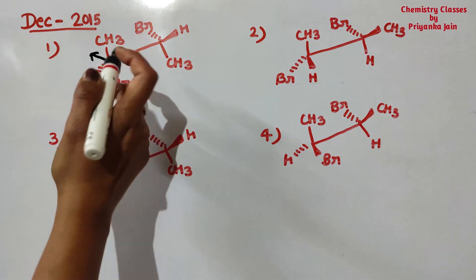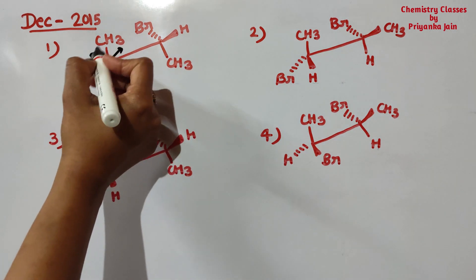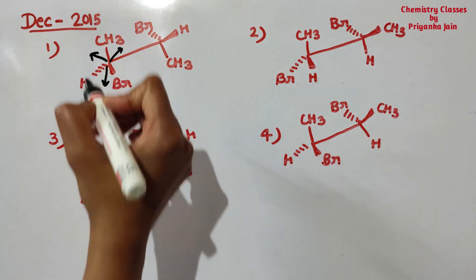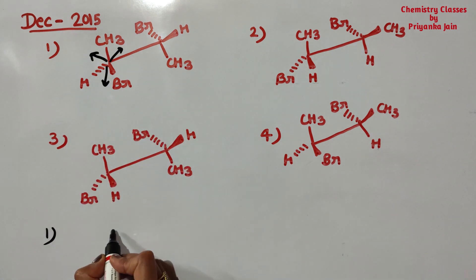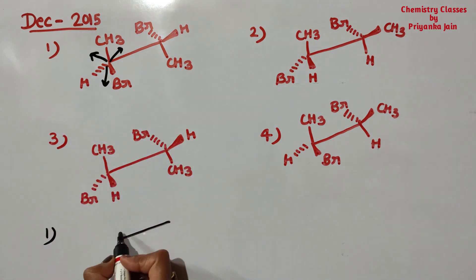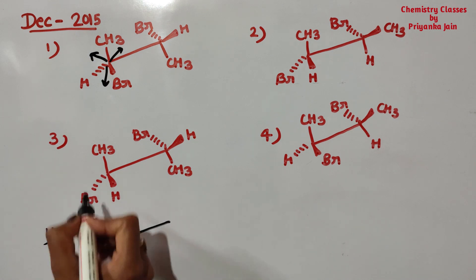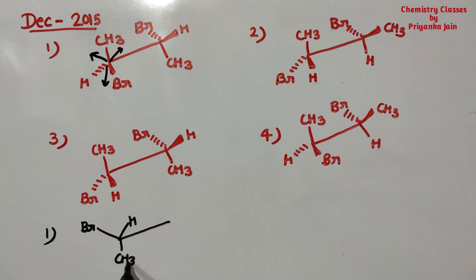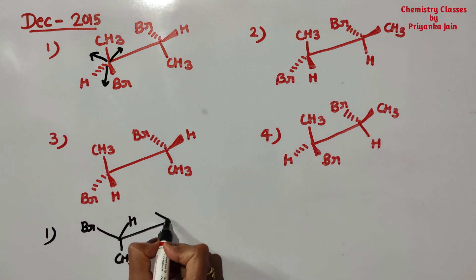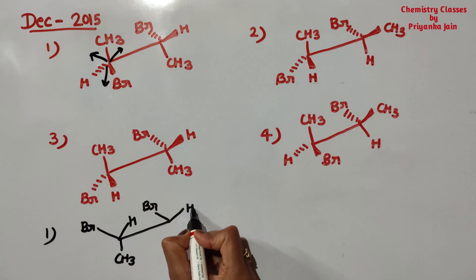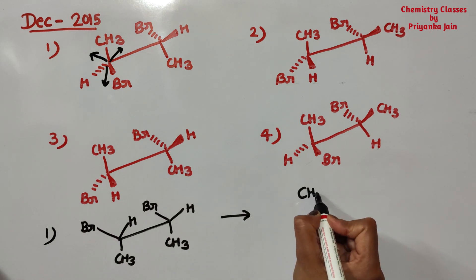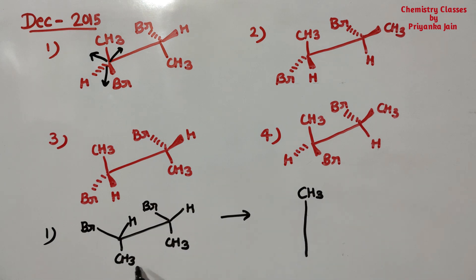You have to convert the inverted Y into the right Y. So this group will go here, this group will go here, and this will go here. When converting the first structure: bromine will come here, here will be hydrogen, and here will be CH₃. The Y remains as it is with bromine, hydrogen, and CH₃. Now write it in the Fischer projection — this group comes here and this group goes down.